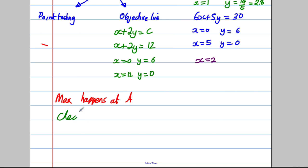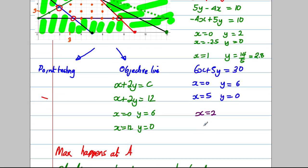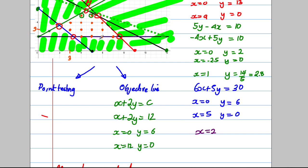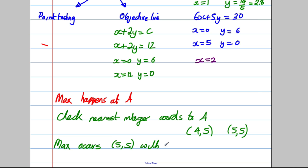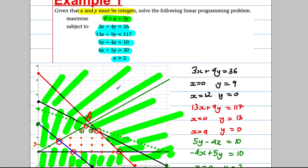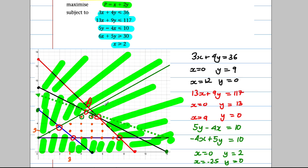We check the nearest integer coordinates to point A, which are (4,5) and (5,5). Checking (5,5) and maximising X plus 2Y, the maximum clearly occurs at (5,5) with value P equals X plus 2Y equals 5 plus 2 times 5, which equals 15.